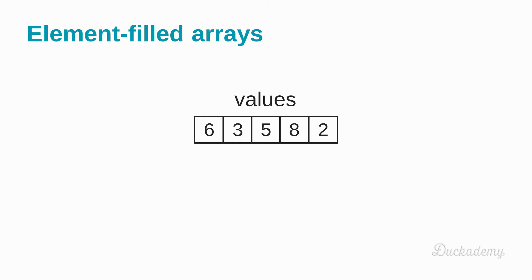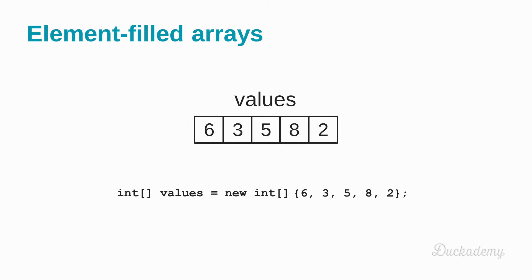How to create arrays with specified elements? The beginning is the same: int square brackets and the name, then equal to new int — and we leave out the size. Instead of the size, we add a curly bracket part in which you can specify the elements. Or you can leave out the first part and just specify the curly brackets part.